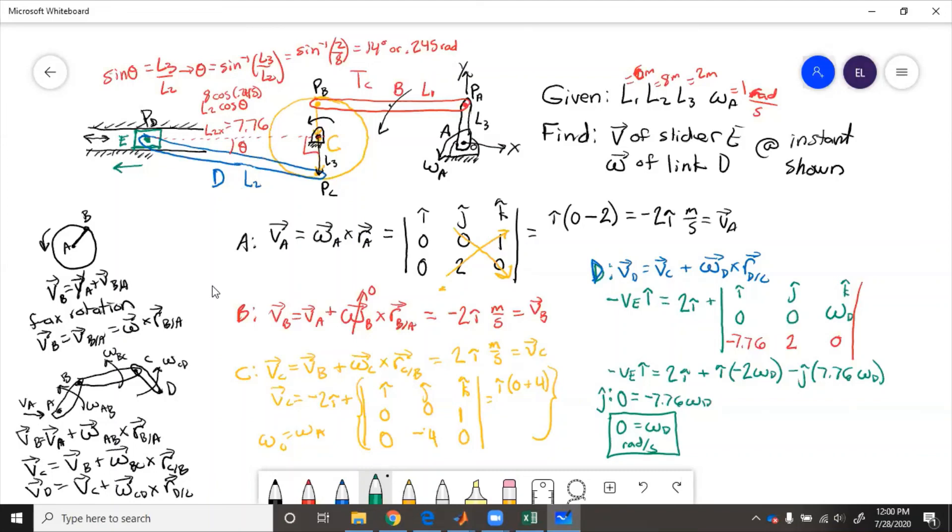So then we'll go on to the i equation, minus VE equals 2 minus 2 times 0, VE equals negative 2, and is in the i hat direction, meters per second.